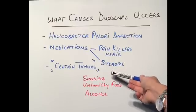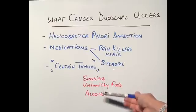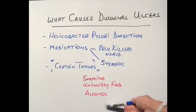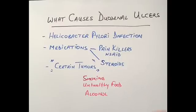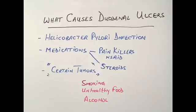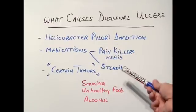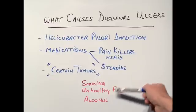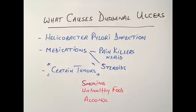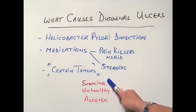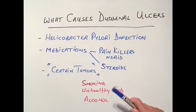We might think that too much smoking, unhealthy foods, and alcohol are the cause of duodenal ulcers, but they certainly do not help. I don't think they are exactly the cause of ulcers — the problem is they make the symptoms and the causes much worse, and healing becomes far more difficult if one continues to smoke, eat unhealthily, and take excessive amounts of alcohol.